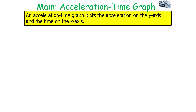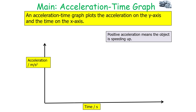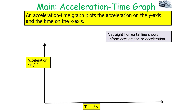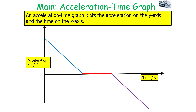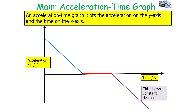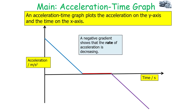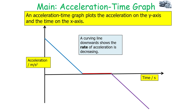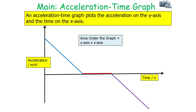An acceleration-time graph plots acceleration on the y-axis and time on the x-axis. A positive acceleration means the object is speeding up; a negative acceleration means it is slowing down; and if acceleration is zero, the object is moving at constant velocity. A straight horizontal line shows uniform acceleration or deceleration. Looking at a specific acceleration-time graph: the blue section shows constant acceleration, the red section shows no acceleration, and the purple section shows constant deceleration. A negative gradient shows the rate of acceleration is decreasing, and a positive gradient shows it is increasing.